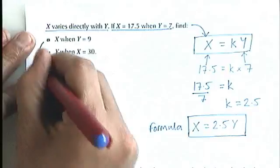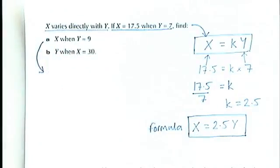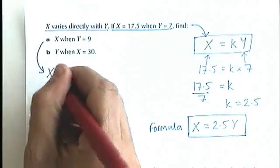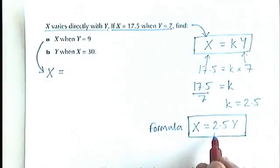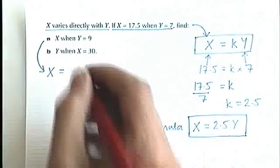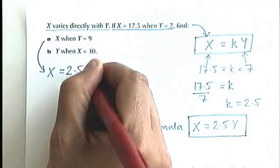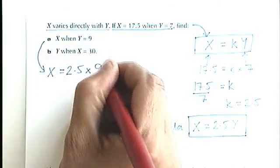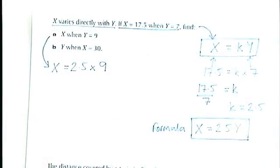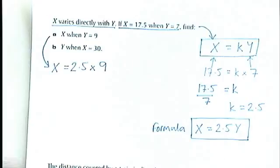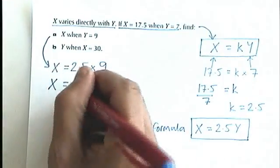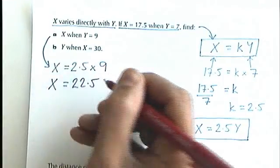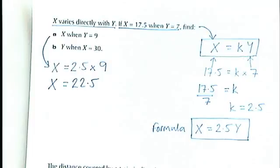So let's have a look at part a now. So part a is ready to be solved. Once we've worked out a formula, we can actually start to substitute some numbers in. So we want to work out the value of x when y is equal to 9. Let's use this formula here. x equals 2.5 multiplied by the y value, which for part a is 9. So 2.5 multiplied by 9 is going to give you 22.5. Pretty straightforward.